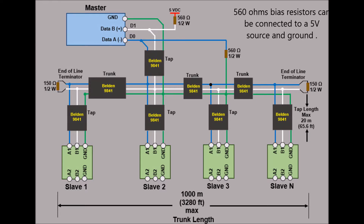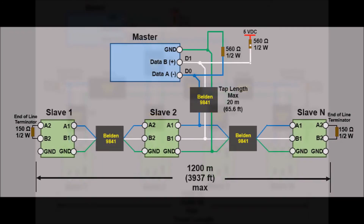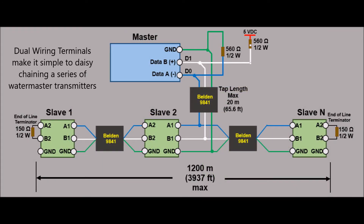A pair of 560-ohm resistors can be connected on the RS-485 balanced pair to bias the signals — a pull-up resistor to a 5-volt source on the D1 circuit and a pull-down resistor to the common circuit on the D0 circuit. The Watermaster has dual wiring terminals for RS-485 connections, which provide a means of connecting the in and out bus cables for daisy chaining directly onto the bus.